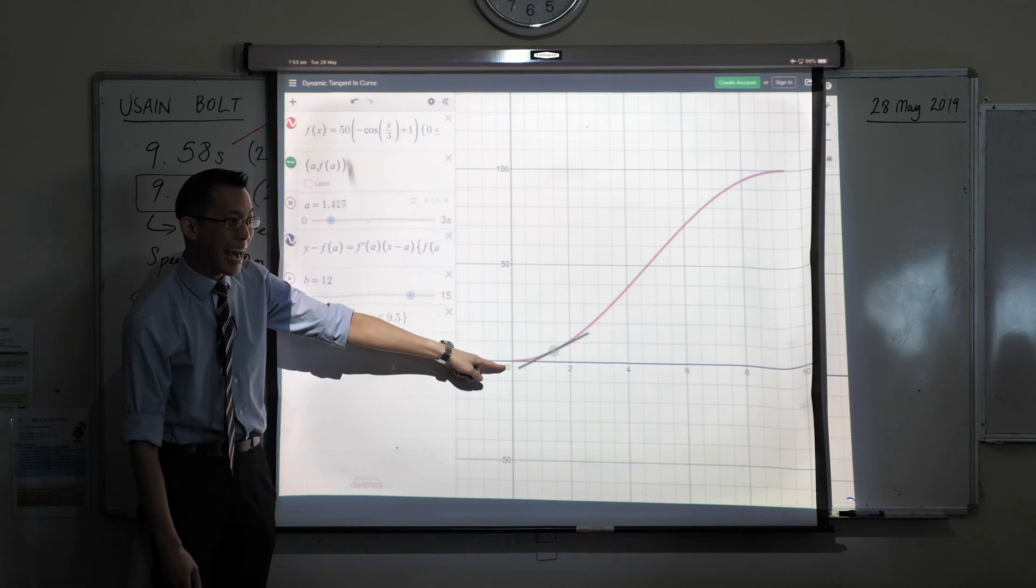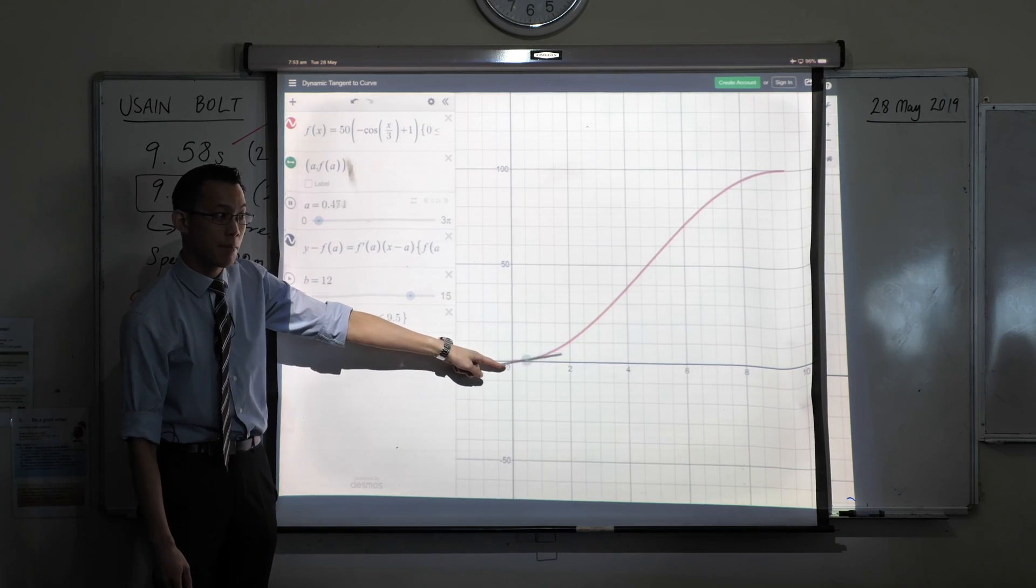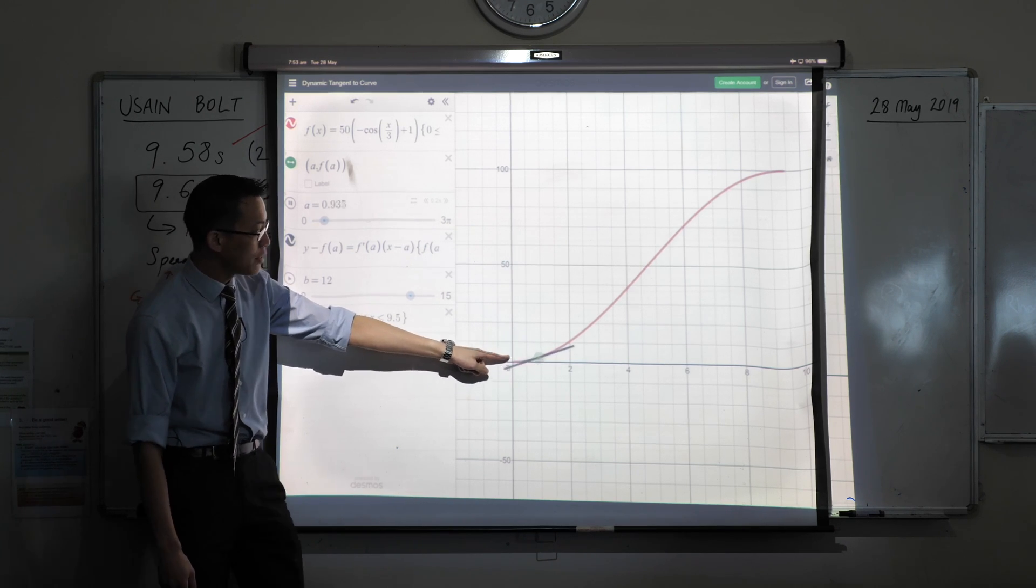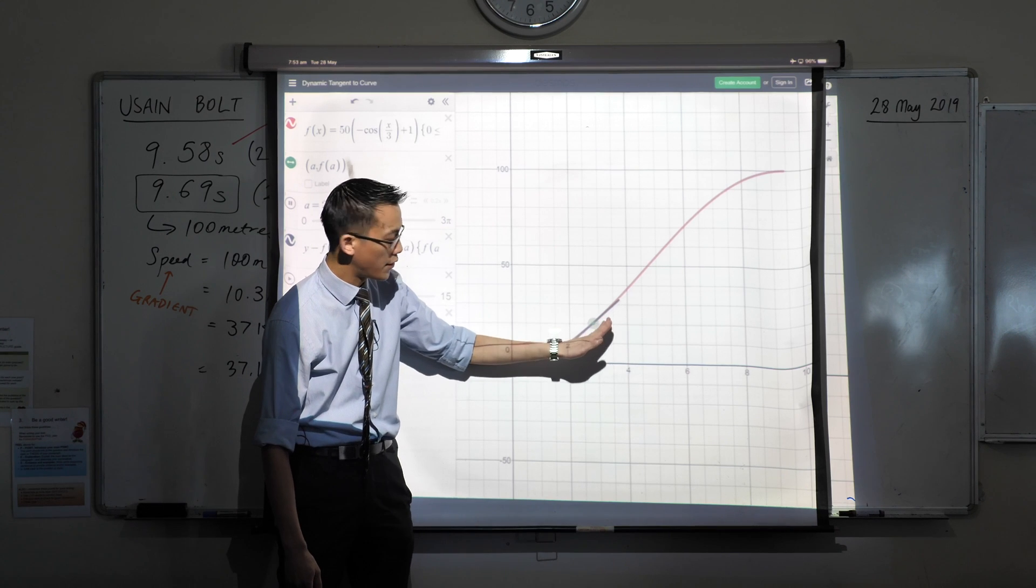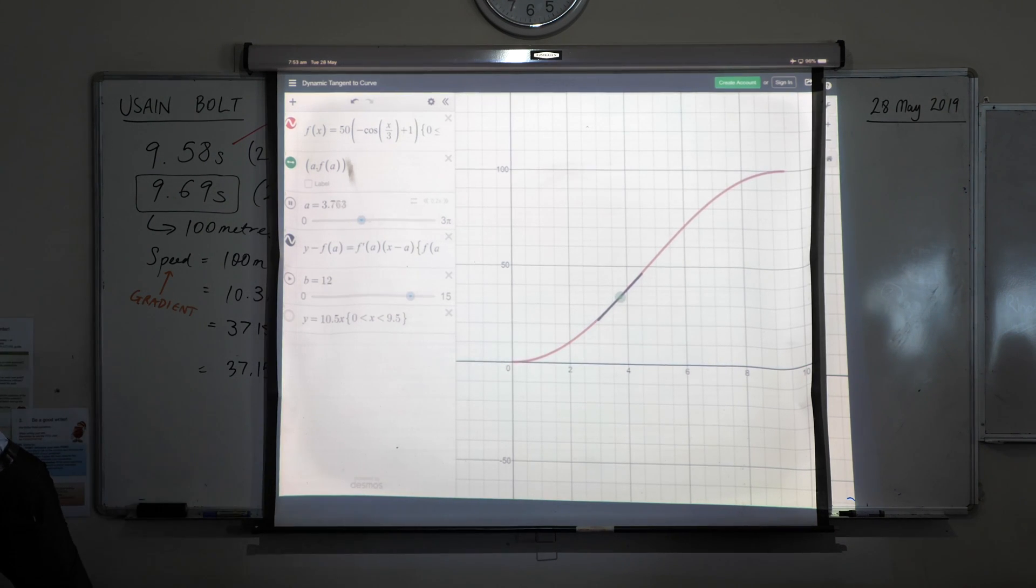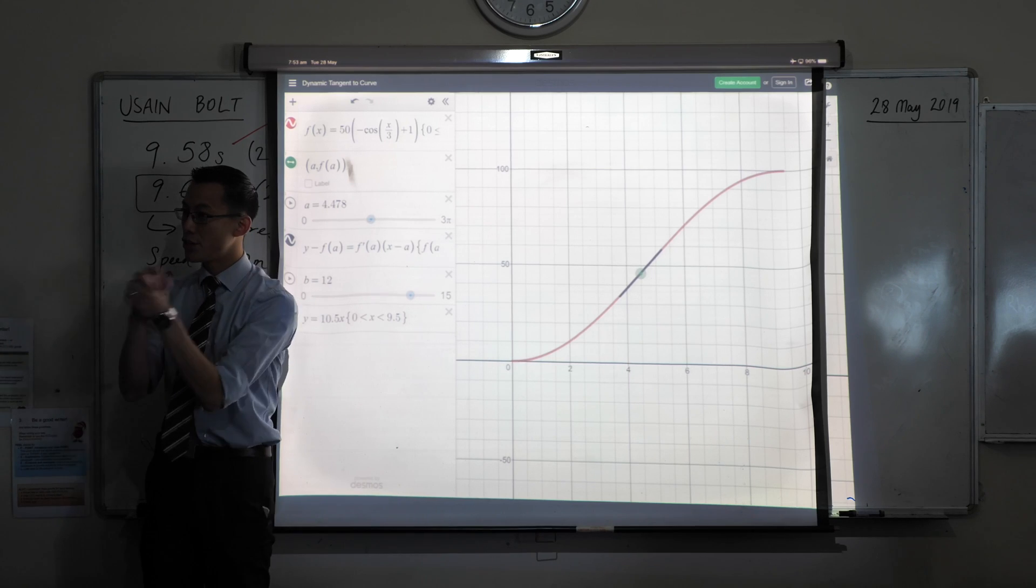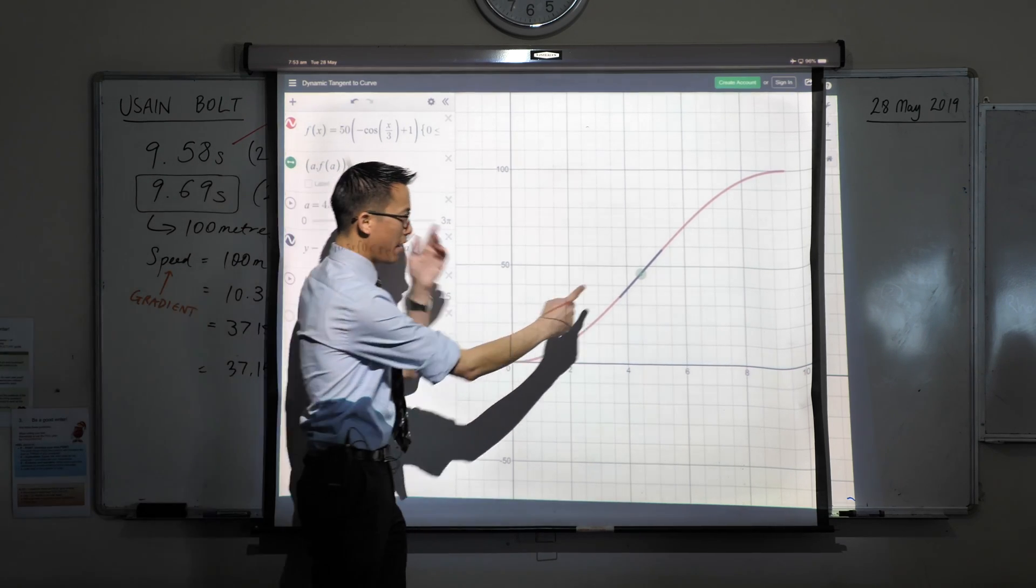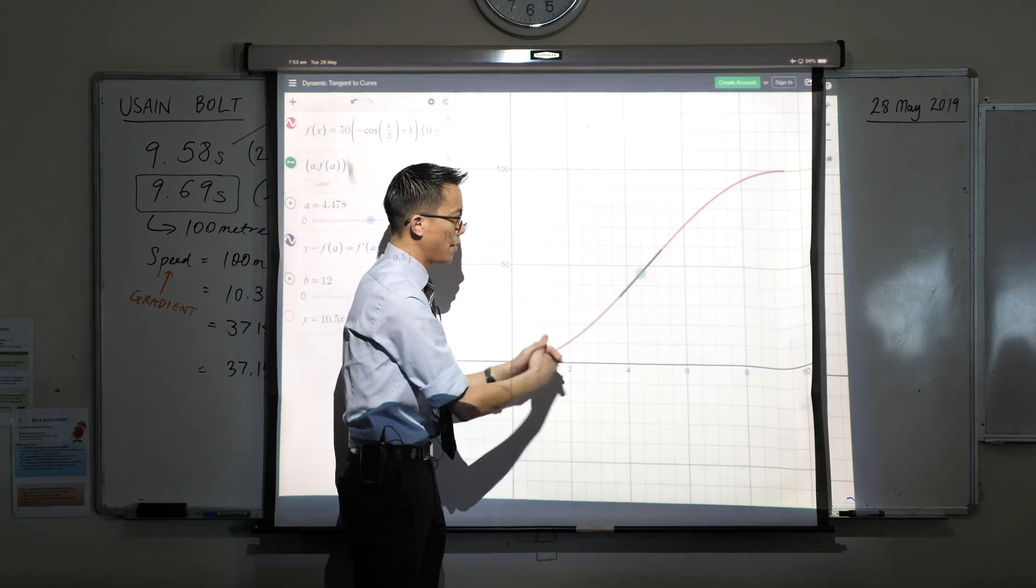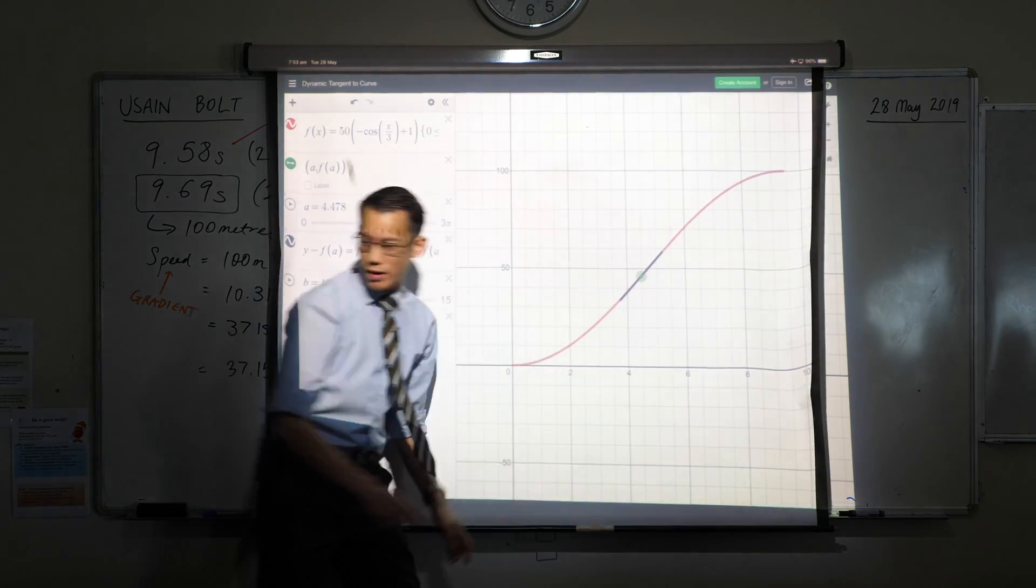And as you get to this middle section here, this is when he starts getting faster and faster and faster. I'm just going to hit pause about there. Now, just have a look at this spot here. This spot is interesting to me because it looks, on this particular graph, that the straight line here, it's always a straight line. Let me just put it back. You can see, no matter where I put it on the graph, that black thing is straight.